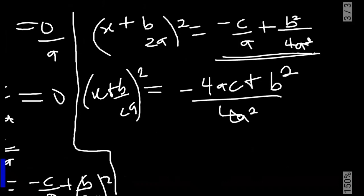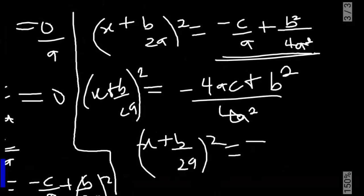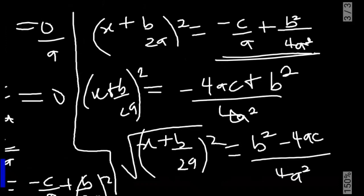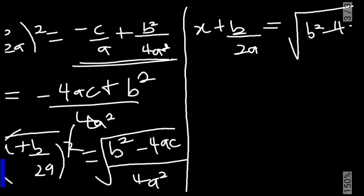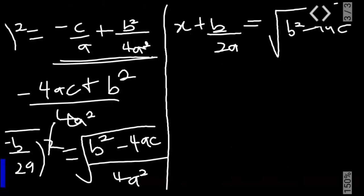We are getting the roots of x, that is the value of x. So we take the square root of both sides in order to get x. We have x plus b over 2a, all squared, equal to b squared minus 4ac over 4a squared. Taking the square root of both sides, we have x plus b over 2a equals the square root of b squared minus 4ac over 4a squared.